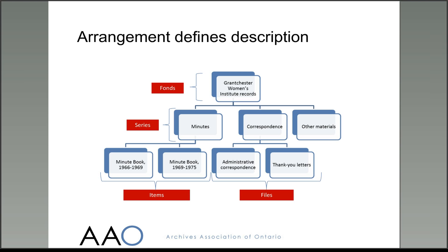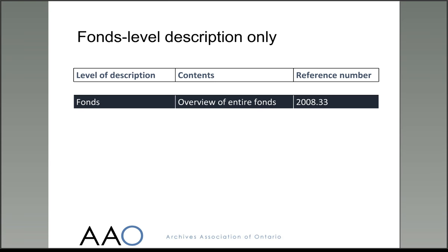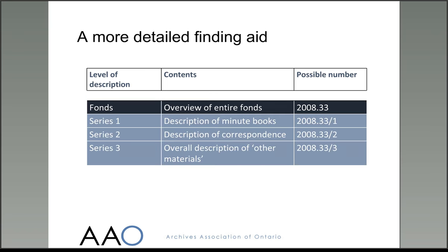The simplest form of description would be just to describe the group of records as a whole. This would give an overview of the fonds, with covering dates for the whole thing, and a summary description of the records. In this version of the finding aid, the archivist has chosen to add descriptions of each of the series of the fonds, as well as the overview of the whole thing. You can see that the series have been numbered one to three.